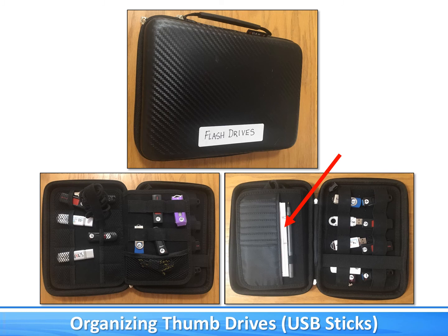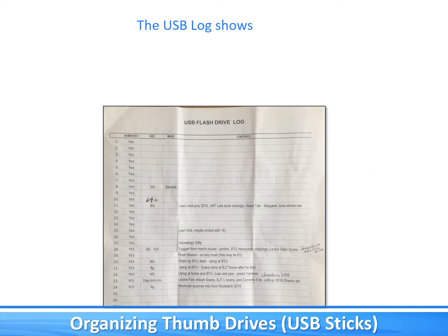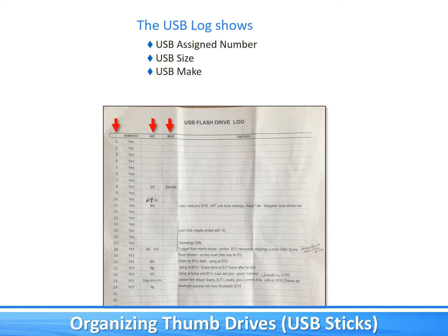I created this log in Excel as well, and you can increase the line width so that you can handwrite on the log rather than typing it in Excel. I have a column for the USB stick number, a column for the storage size of the disk — whether it's 64 gig, 8 gig, etc. — a column for the make or brand, and the last column is for the contents of the disk. You can change this log to contain any information you want, and you can also put a plus or minus next to the size indicating whether the disk is full or empty.